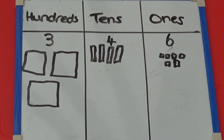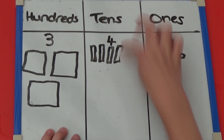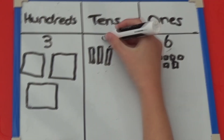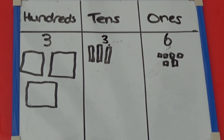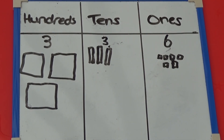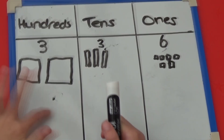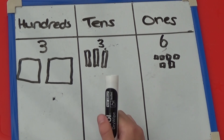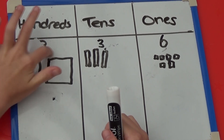I've drawn out the number 346. To subtract 10, I need to rub out a tens rod, which makes my number 336. Then, to subtract 100, I'm going to rub out a 100 square. So my number now is 236.